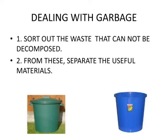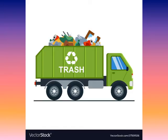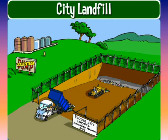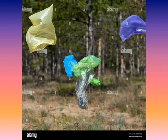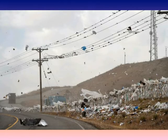We will see about dealing with garbage — what is done to the garbage collected. Safai Karamcharis collect the garbage from homes, shops, etc. in trucks and take it to a low-lying open area called a landfill. A landfill is a low-lying open area. It is low-lying because if garbage is put in a high-lying area, then due to rain or wind, the garbage will come back into living areas and create a mess. Hence, a low-lying open area is selected for putting the garbage, which is called a landfill.